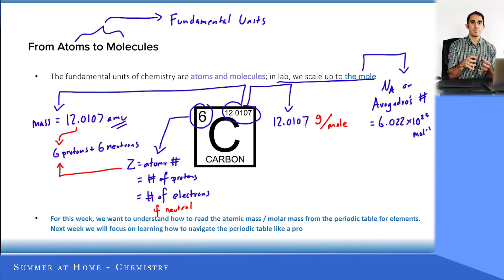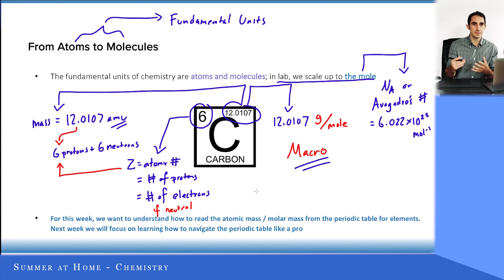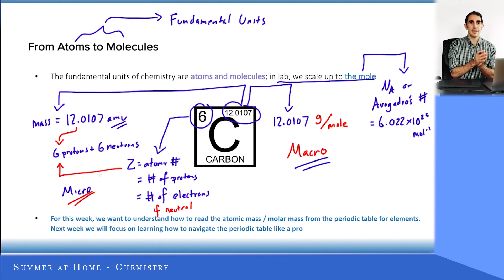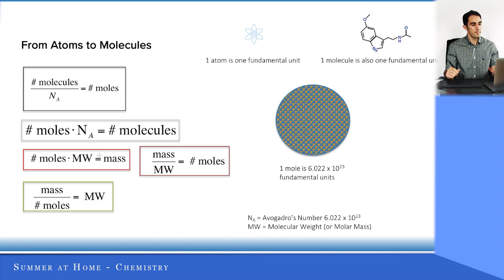A mole is simply a package of a bunch of molecules or atoms. How much is a bunch? A bunch is 6.022 × 10²³. That is a perfect conversion between the macro world — the big picture, experimental measurement world — and the micro world, which is the tiny fundamental universe of atoms and molecules. Next, I'm going to show you some mathematical relationships to get between all these worlds.